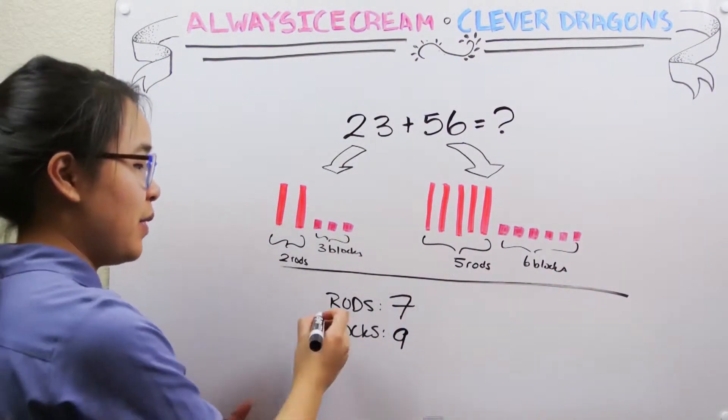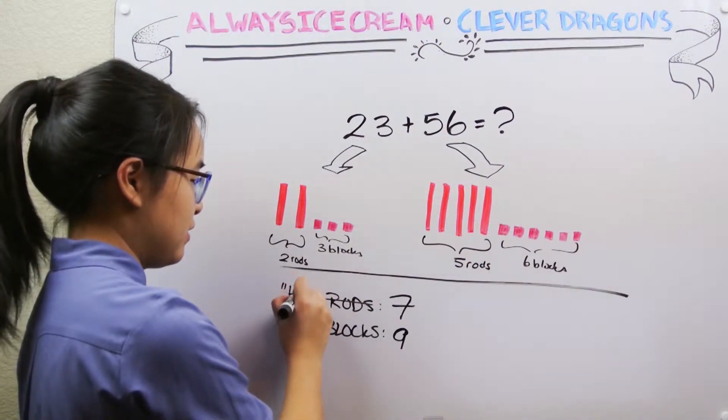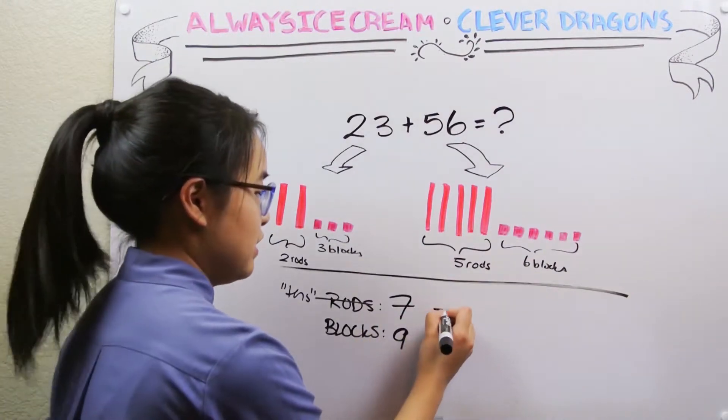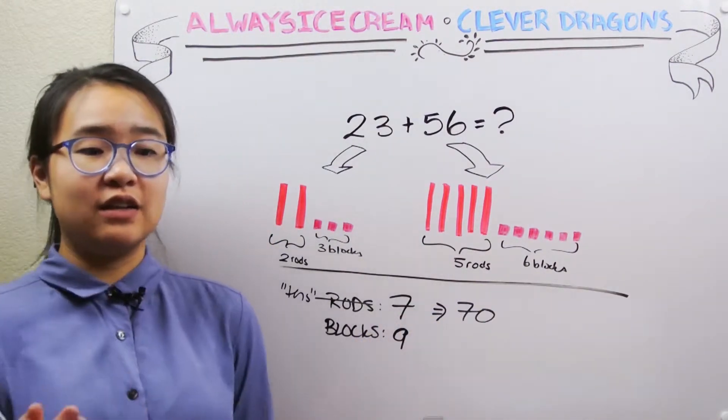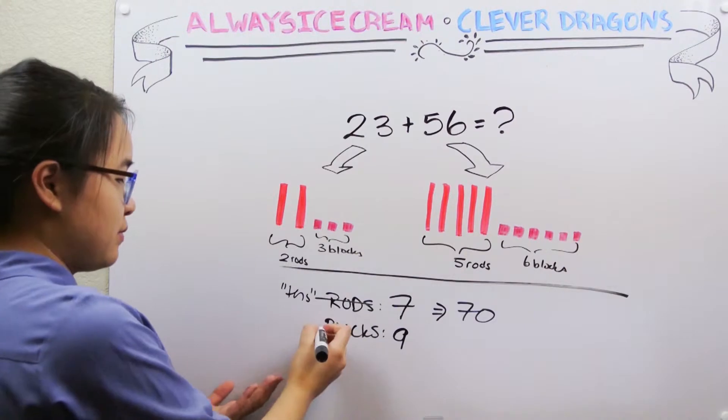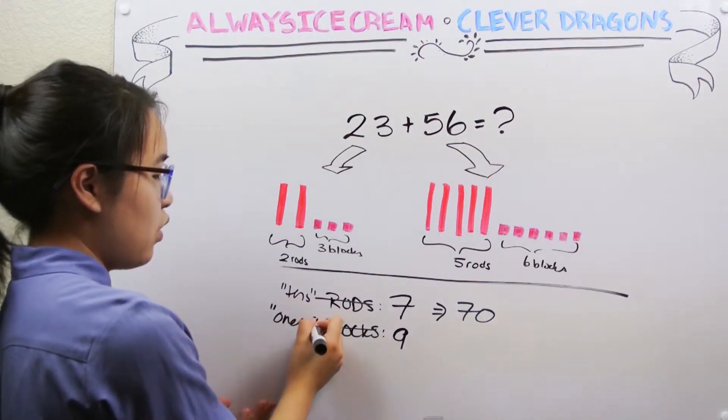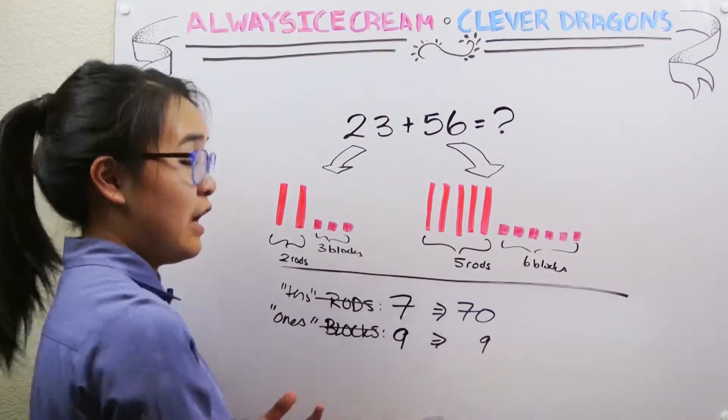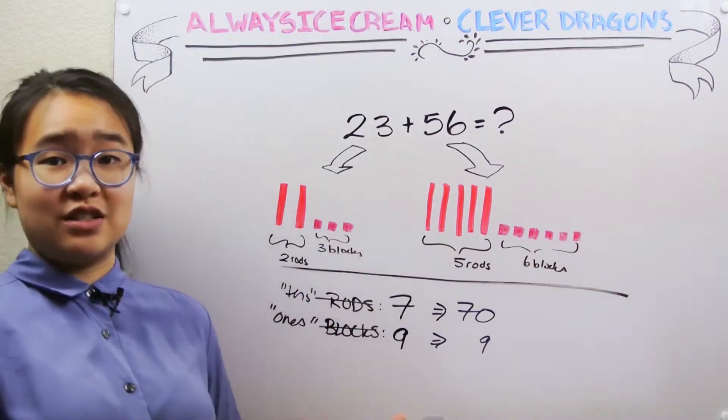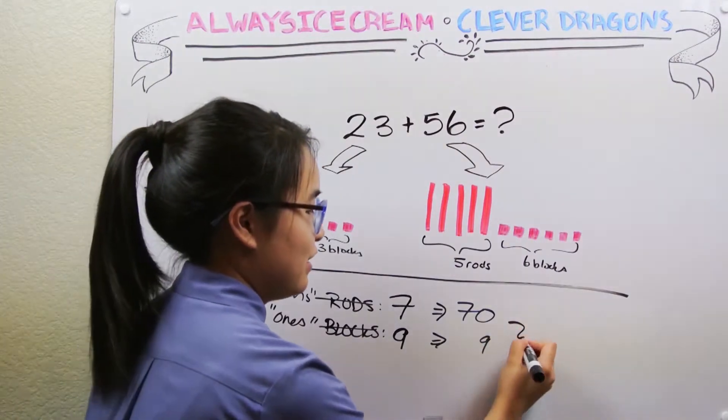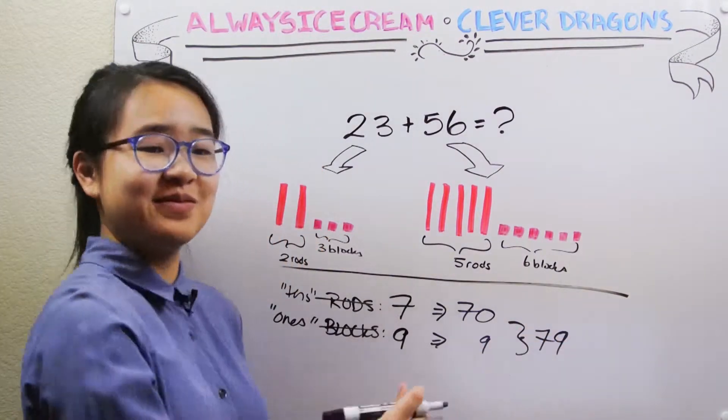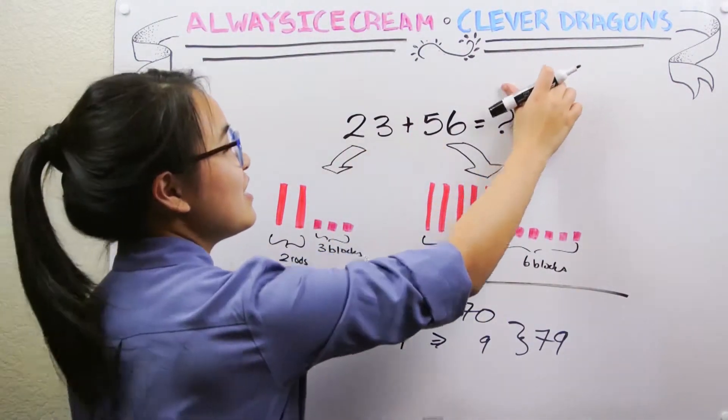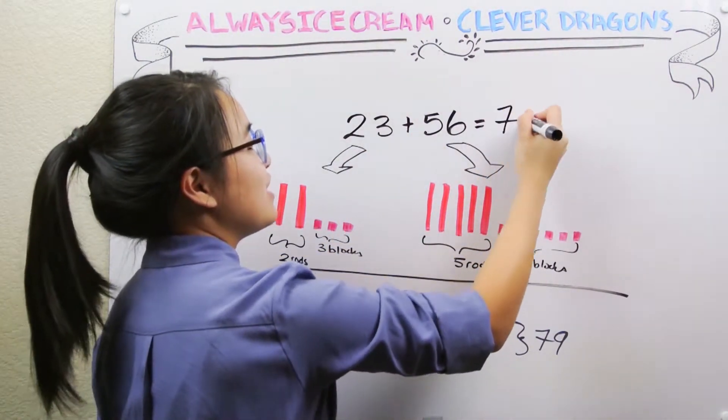Now remember, rods are basically just tens. So when we have seven rods, what we're really saying is that we have 70. And units are just ones. So nine units really just means nine. Now we can add 70 and nine together. That just gives you 79. So we can say that 23 plus 56 is equal to 79.